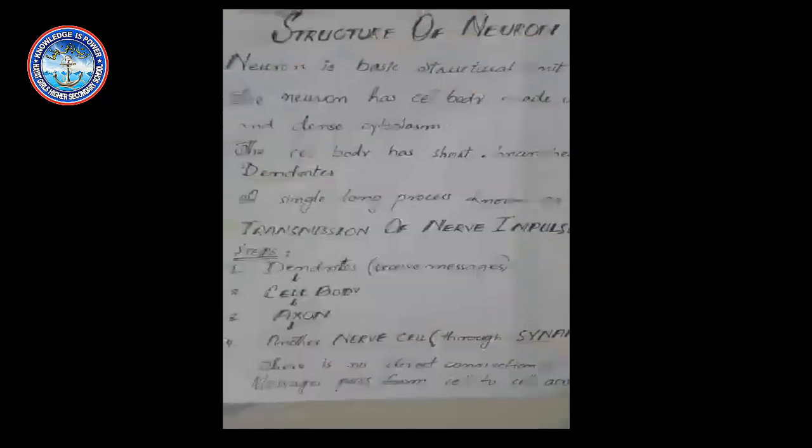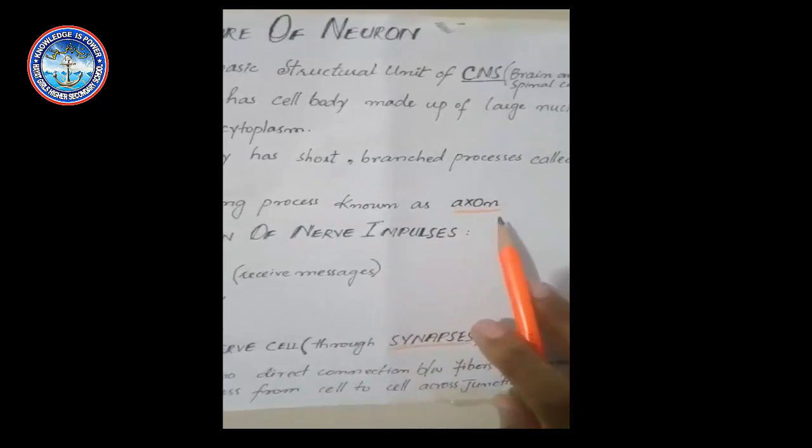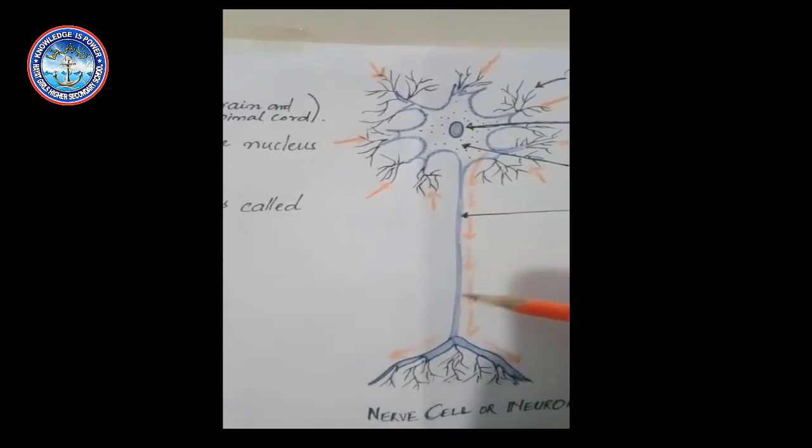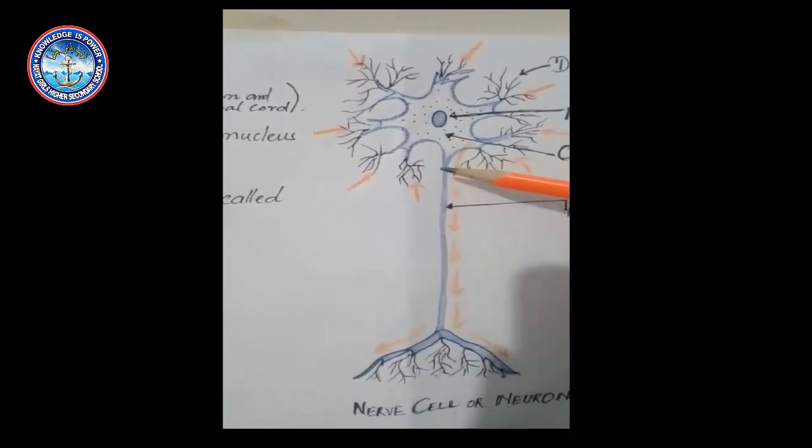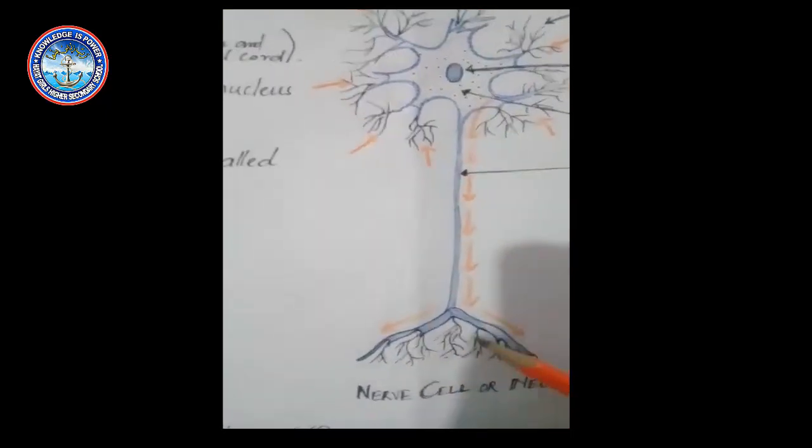Third, a single long process known as axon. As this picture shows, this single long process is considered as the axon. At the end of the axon, fine branches are also present.